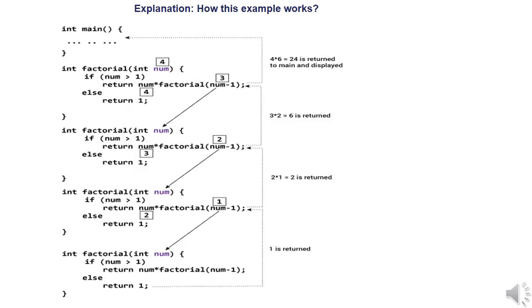The value 4 is assigned to the formal parameter inside the function definition — whatever it may be, n or num. It checks if that number is greater than 1. Since 4 is greater than 1, the condition is true. It will return 4 into factorial of n minus 1, that is factorial of 3. The factorial function is calling itself by passing the value 3.